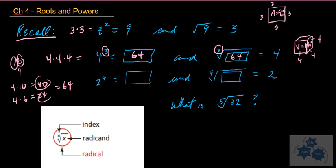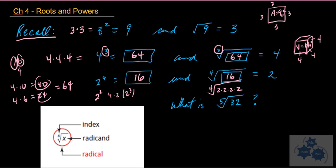We also did 2 to the 4th. You probably know 2 squared is 4, so 4 times 2 is 8 — that's 2 cubed. So 2 to the 4th is just 8 times another 2, which is 16. The 4th root of 16 is 2 because 16 can be written as 2 times 2 times 2 times 2 — the same factor appearing all 4 times.